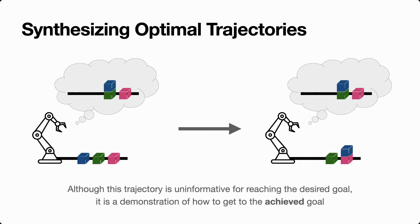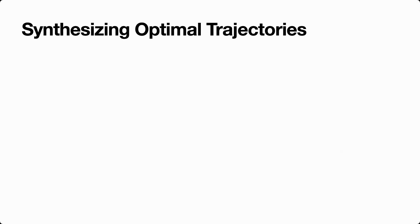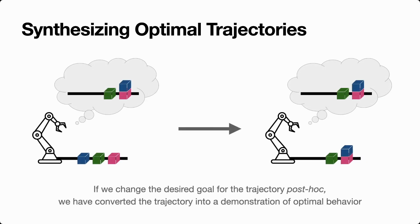As a general maxim, any trajectory, even if it's uninformative for reaching the desired goal, is a demonstration for reaching the goal that was actually achieved. We can start taking suboptimal trajectories and turning them into optimal ones by relabeling the desired goal for the trajectory post hoc to be the goal that was actually achieved. In this case, just changing the desired goal to have the blue block on top of the red block turns this trajectory into a demonstration of optimal behavior.